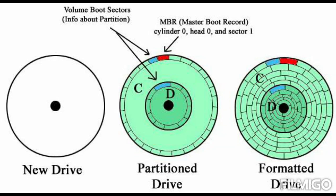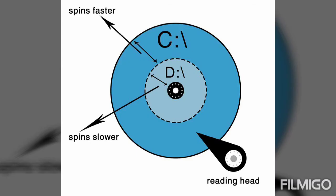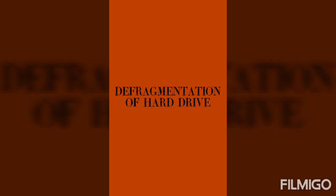If a hard disk has only one partition, the hard disk is usually designated as Drive C. If the hard disk is divided into two partitions, the first part is designated as Drive C and the second part is designated as Drive D. So this was partition — dividing a single hard disk into separate areas known as partitions.